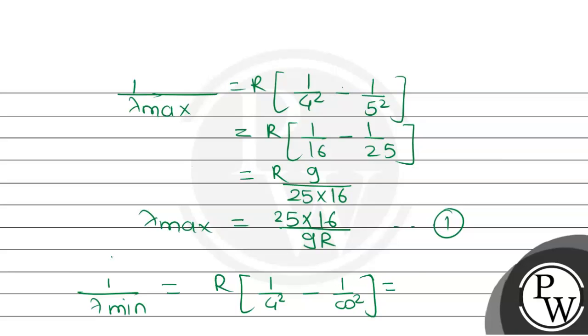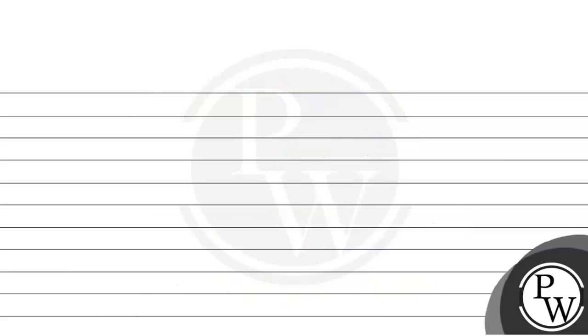This will become R by 16. So it means that lambda min will be 16 by R.